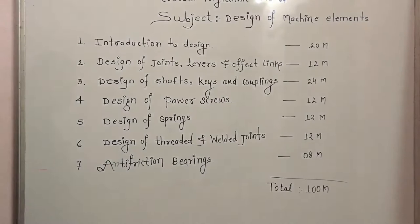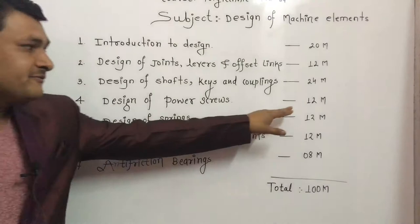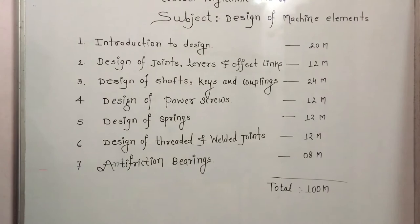Next chapter is Design of Shafts, Keys, and Couplings. It is given for 24 marks. Next one is Design of Power Screws. This power screws chapter is given for 12 marks.